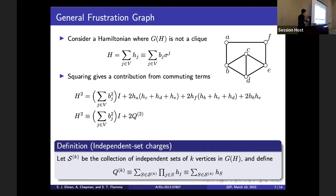We generalize this to arbitrary K. Let S_K be the collection of independent sets of K vertices in the frustration graph. We define Q_K as the sum over all products of K Paulis from independent sets. One nice feature of this formalism is that it allows you to coarse-grain Hamiltonian terms naturally: a product over operators in an independent set can be treated as a single vertex in a new frustration graph, with neighbors given by the Z_2 symmetric difference of all neighbors of the original vertices. These are the independent set charges.